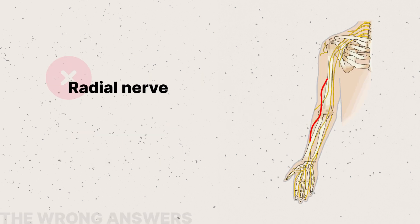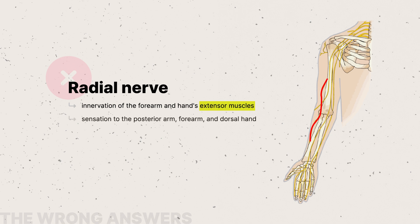The radial nerve mainly innervates the extensor muscles of the forearm and hand, and provides sensation to the posterior arm, forearm, and dorsal hand. It is not typically implicated in repetitive strain injuries.